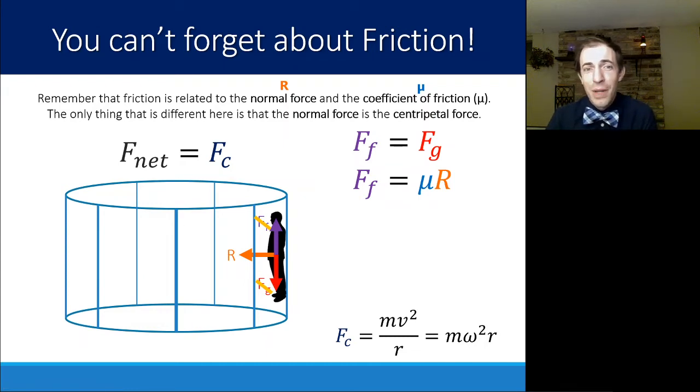So what we can do there is we can say the only force that's remaining is going to give us our net force. And that net force, when it's moving in a circle is equal to the centripetal force. So we know all of that has to be R. So the net force is the centripetal force, two ways of saying the same thing for circular motion. And that must equal the normal reaction force for this example of a rotor.